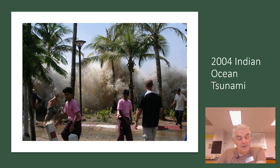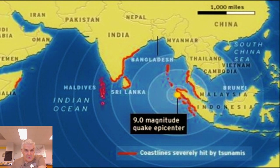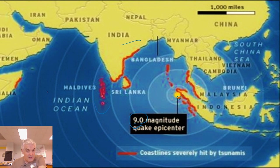The worst incident — maybe the worst natural disaster in history — was the 2004 Indian Ocean tsunami, sometimes called the Sumatran tsunami. It killed 200,000 to 240,000 people as it propagated throughout the whole area. The earthquake was a 9.0 magnitude, starting near Sumatra, and the tsunami spread throughout the region hitting coastlines from Thailand to India. There was no early warning system, and 200,000 people on the coast were killed.